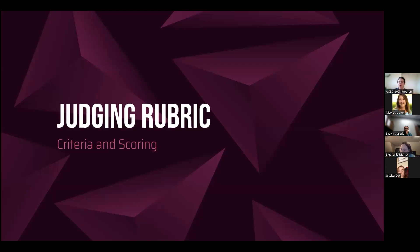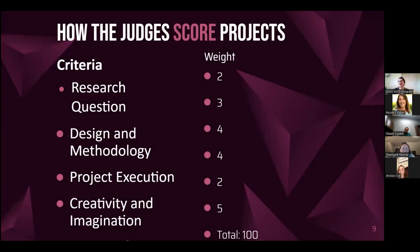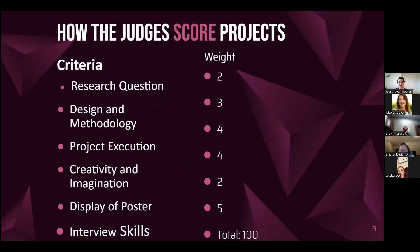Our judging rubric — we'll go over the criteria and scoring. How the judges score: we have six criteria, each scored on a one-through-five scale with a weight attached. Our first criteria is the research question, which has a weight of two. If your student gets a three in the research question, that's three out of five, giving them six points — you take the raw score and multiply it by the weight. In total, students can earn up to 100 points.